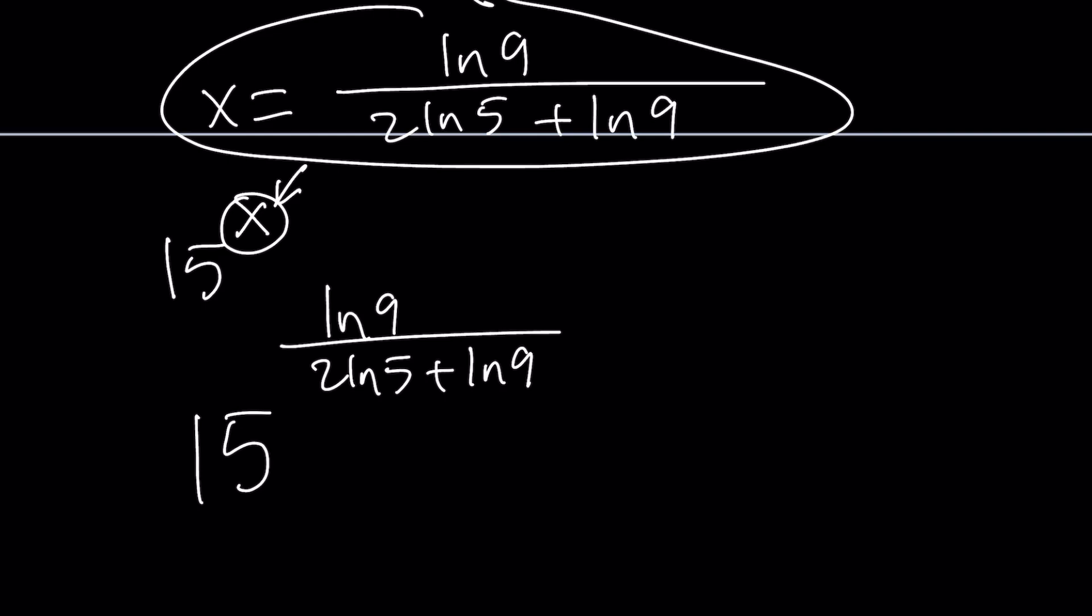We can work on this because at the bottom, we have something that can be simplified. The base is 15, but this is ln, so it doesn't work directly. If you have b to the power log a with base b, this is always a. If I got something like 15 to the power log 3 with base 15, this would equal 3. I need to write it as a log in base 15.